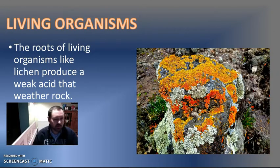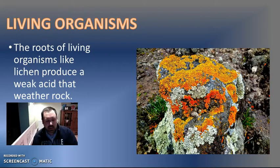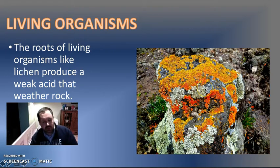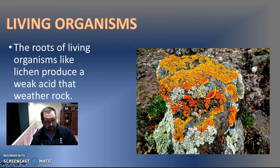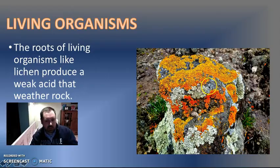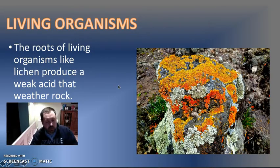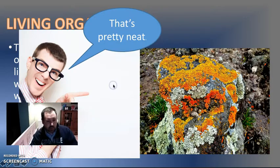Another thing is living organisms. The roots of living organisms, like lichen, produce a weak acid that weathers the rock. Here we've got lichen — it's really colorful, and it's a plant. The plant is growing on the rock, but the roots make a very weak acid that breaks the rock down. Granted, it's going to take a long time, but these plants are going to break this rock down into smaller pieces. That's another example of chemical weathering.